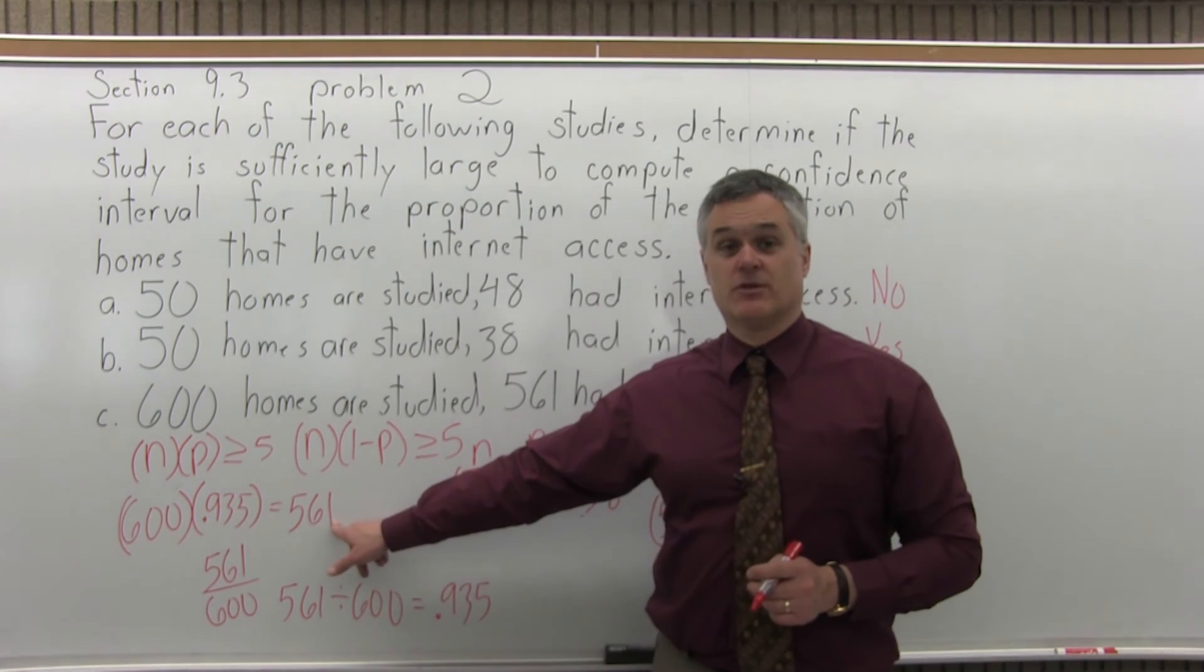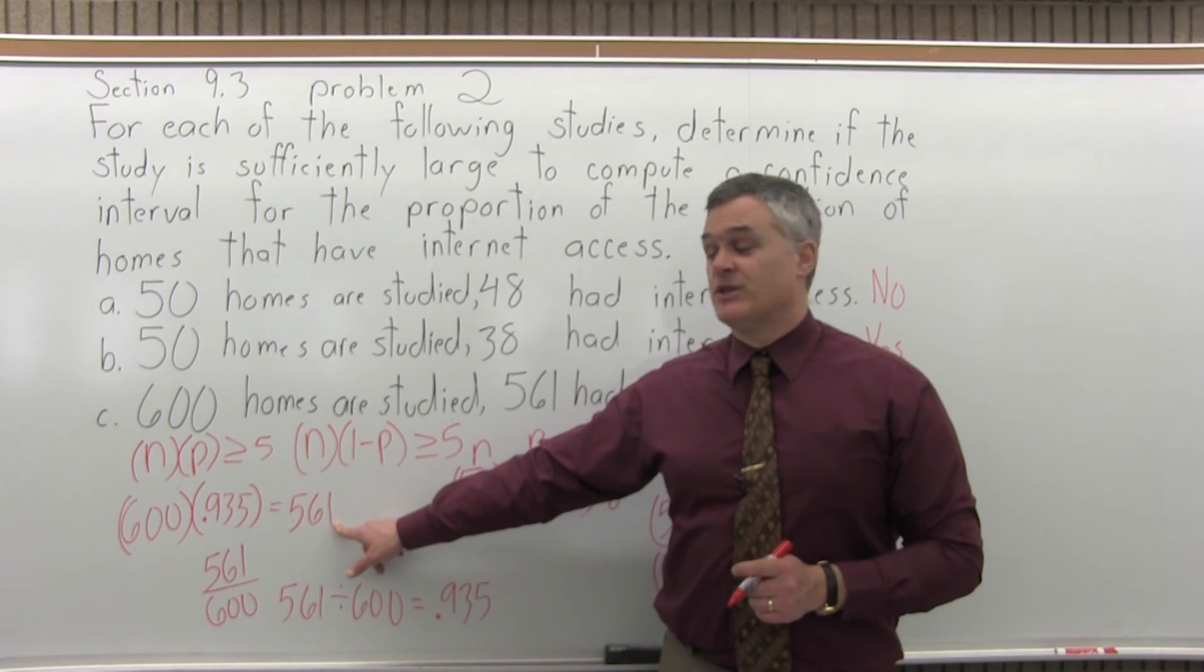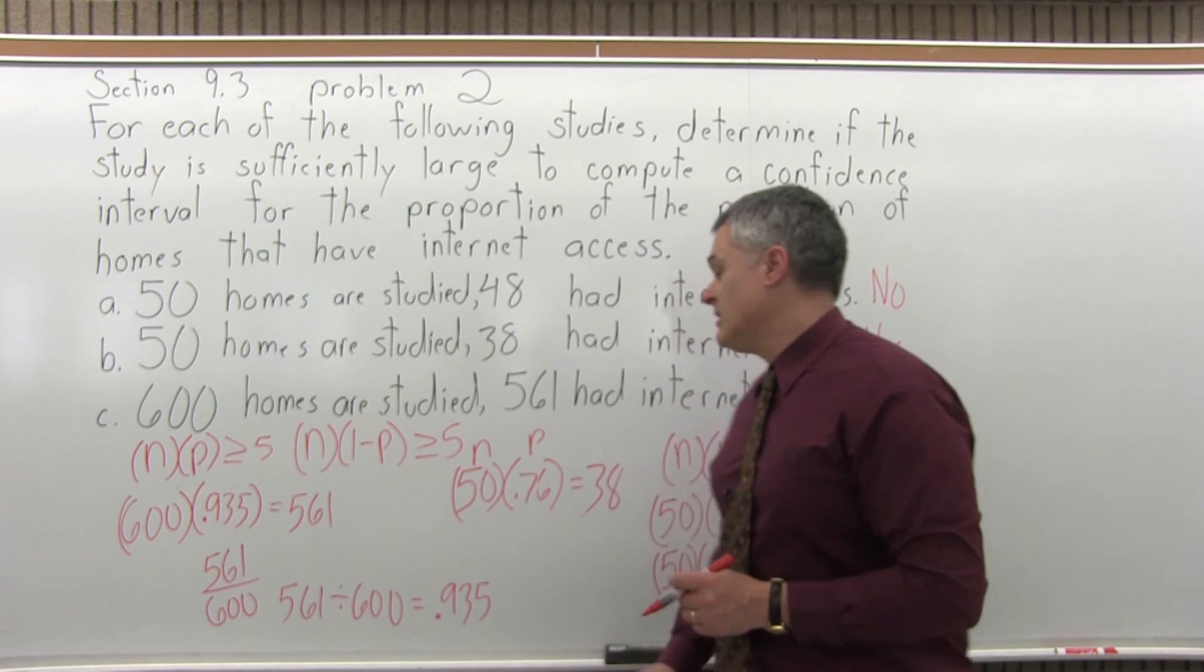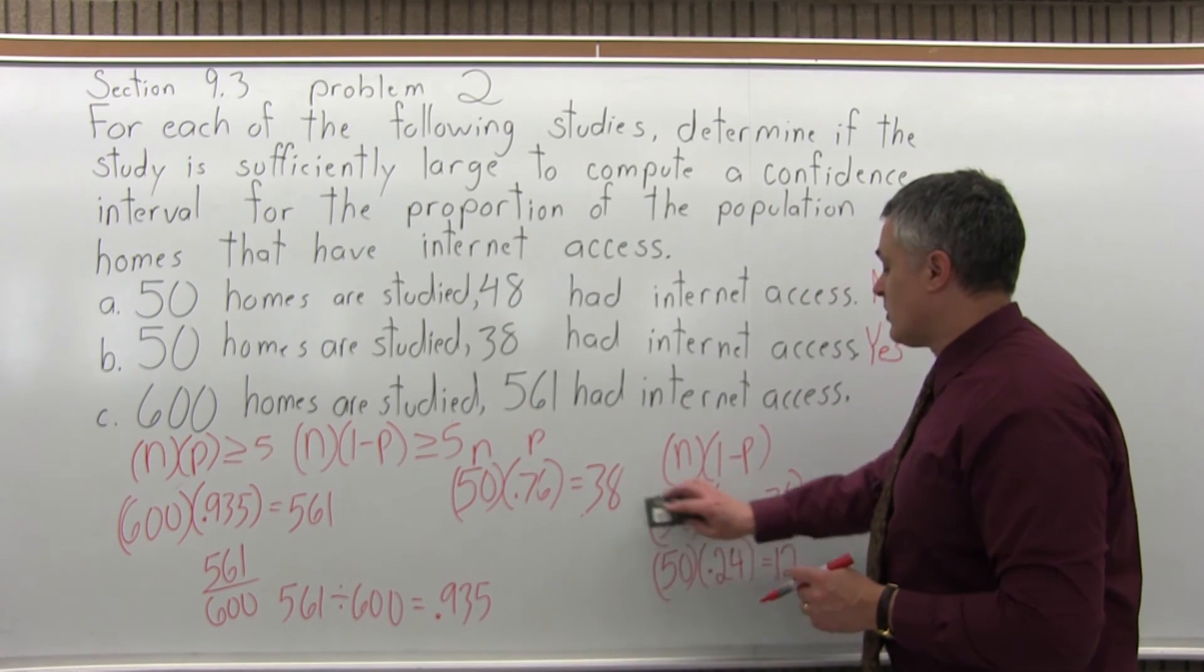That's certainly bigger than 5. So, the n times p comes out to be at least 5. That's good. Let's next try n times 1 minus p.